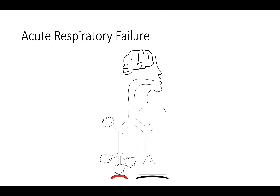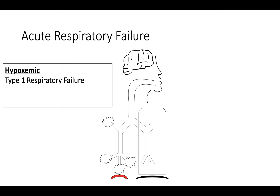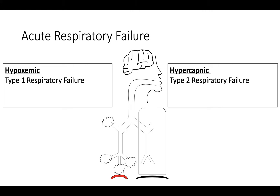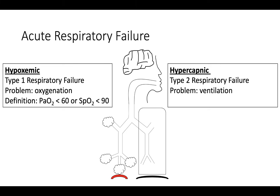First, we need to define the two major types of respiratory failure. We will use the diagram in the center of the screen to help us throughout the session. The two major types are hypoxemic respiratory failure, also known as type 1 respiratory failure, and hypercapnic respiratory failure, known as type 2 respiratory failure. Hypoxemic respiratory failure is defined as an oxygen saturation less than 90% or PaO2 less than 60 mmHg on room air. Hypercapnic respiratory failure is defined as a PaCO2 greater than 45 mmHg plus an accompanying respiratory acidosis or pH less than 7.35.